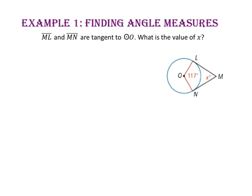In example one, we will find angle measures. Segment ML and segment MN are tangent to circle O. What is the value of X? Since segment ML is a tangent to circle O, it is perpendicular to radius OL. That means angle L is 90 degrees.